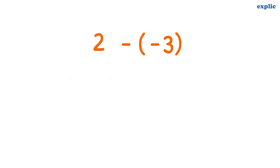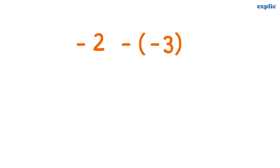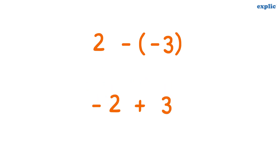If there are two consecutive negative signs separated by a bracket, once you remove the bracket, they form one positive sign. So subtraction of a negative number is actually the addition of a positive number.